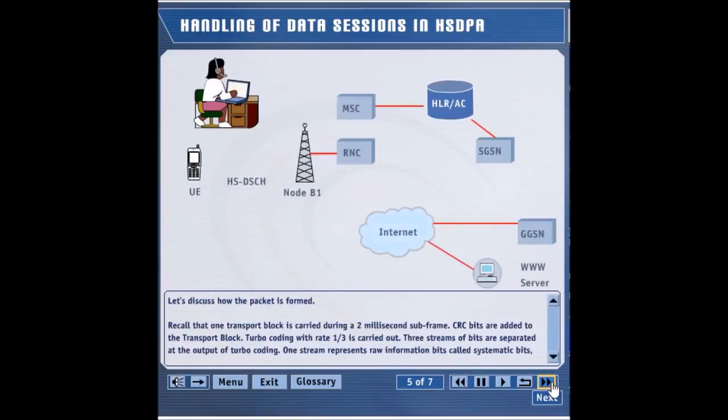After the call setup is over, an end-to-end link between Sue's UE and the WWW server is established when Sue initiates a web browsing session. In the downlink direction, the packet data flows from the WWW server all the way up to UE.